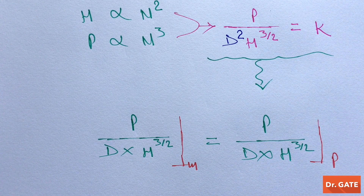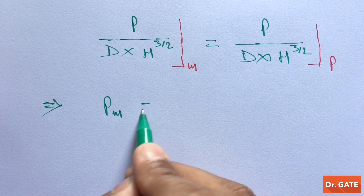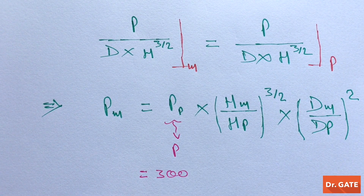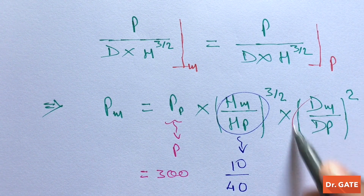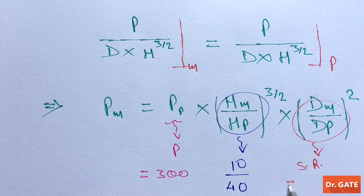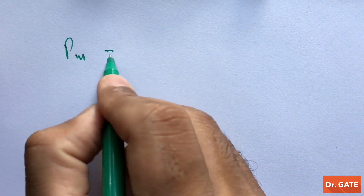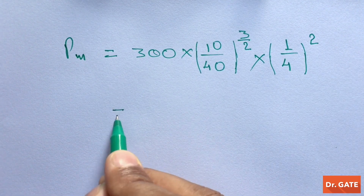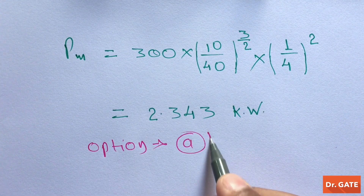By mistake D was written in place of D squared — now corrected. From the expression for power generated by the model, substituting 300 kW, head ratio of 10/40, and scale ratio of 1/4, we get the power generated by the model as 2.343 kW. So option A is correct.